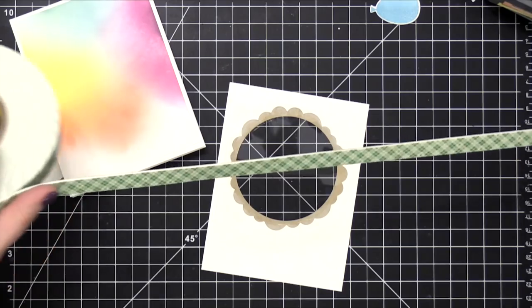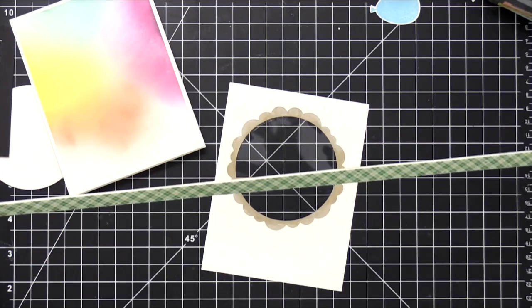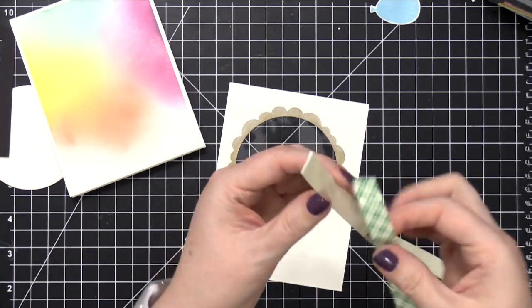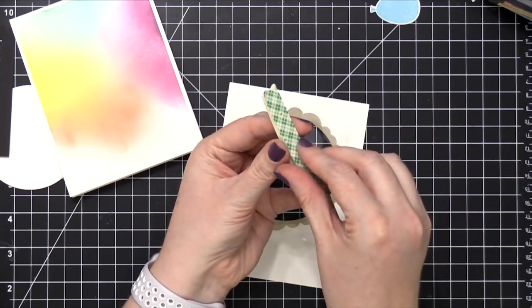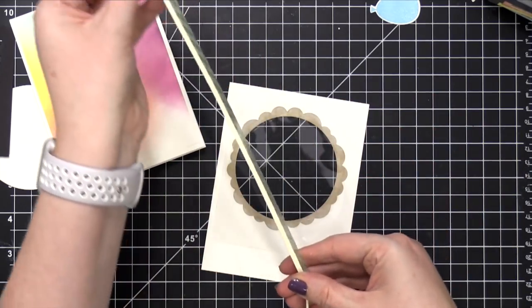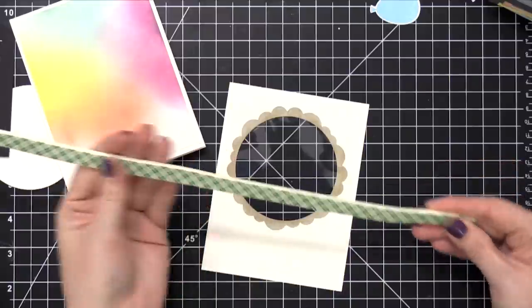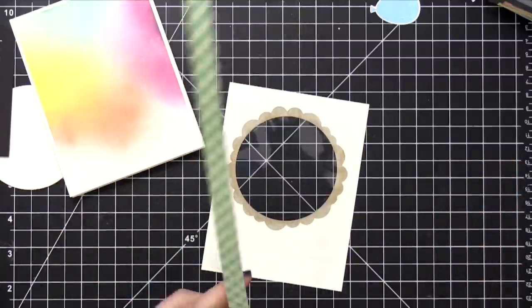So now I'm gonna take some foam tape. This is a huge roll of foam tape from 3M and Scotch. I tore off a really long piece and then folded it over so that it creates a double depth of foam.